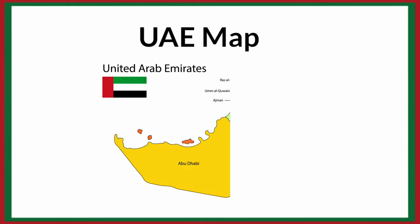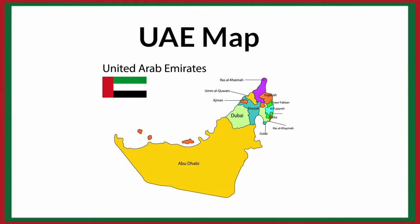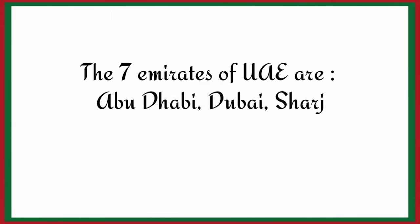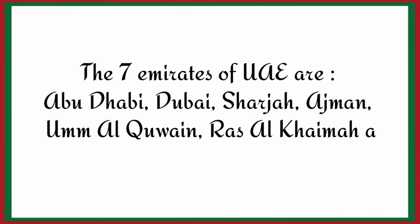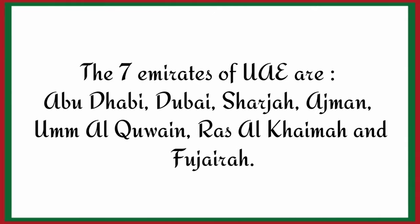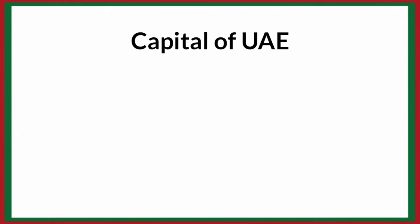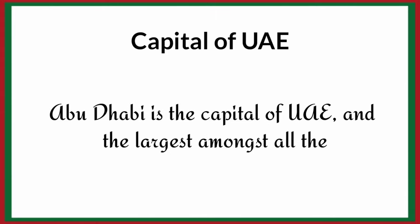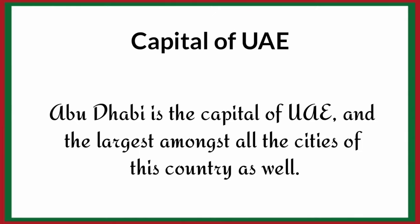UAE Map. The seven Emirates of UAE are Abu Dhabi, Dubai, Sharjah, Ajman, Umm Al Quwain, Ras Al Khaimah and Fujairah. Abu Dhabi is the capital of UAE and the largest among all the cities of this country as well.